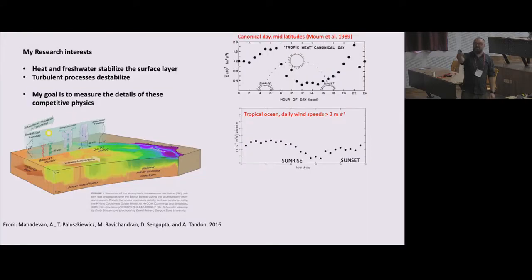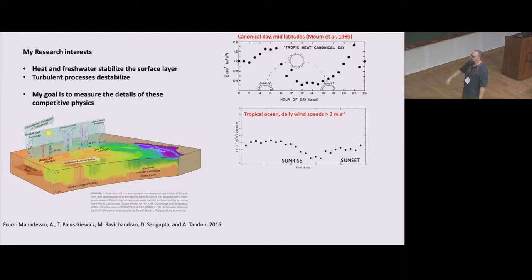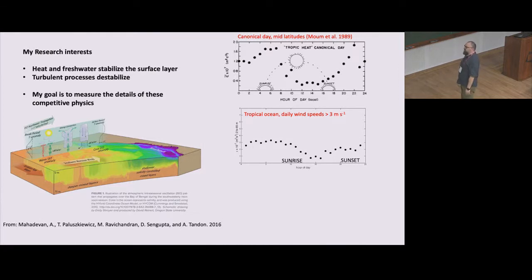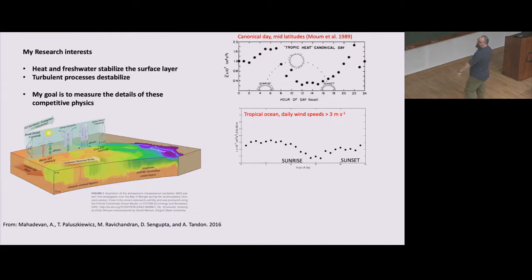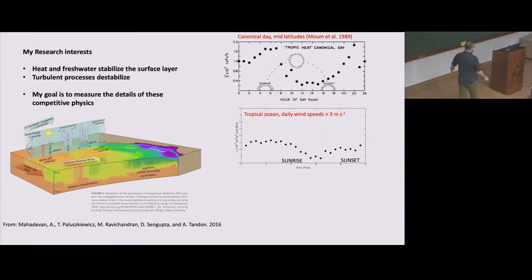That cycle, in normal mid-latitude conditions where there's some amount of wind blowing, generally repeats. This is Jim's canonical picture. This is a dataset collected as part of a program called SPURS in the mid-tropical Atlantic during 2012, and as you can see, as long as the wind's blowing a little bit, it follows the same thing.